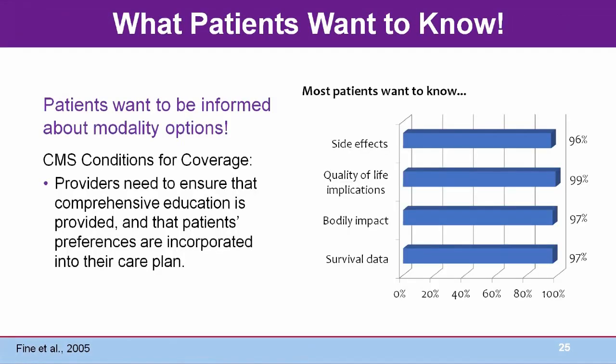Patients want to be informed about modality options — specifically about side effects, quality of life, physical impact, and survival data. Not only do these patients want to know, they have a legal right to know. This disease is a Medicare disability, and the CMS conditions for coverage state that providers need to ensure that comprehensive education is provided and that patients' preferences are incorporated into their care plan.